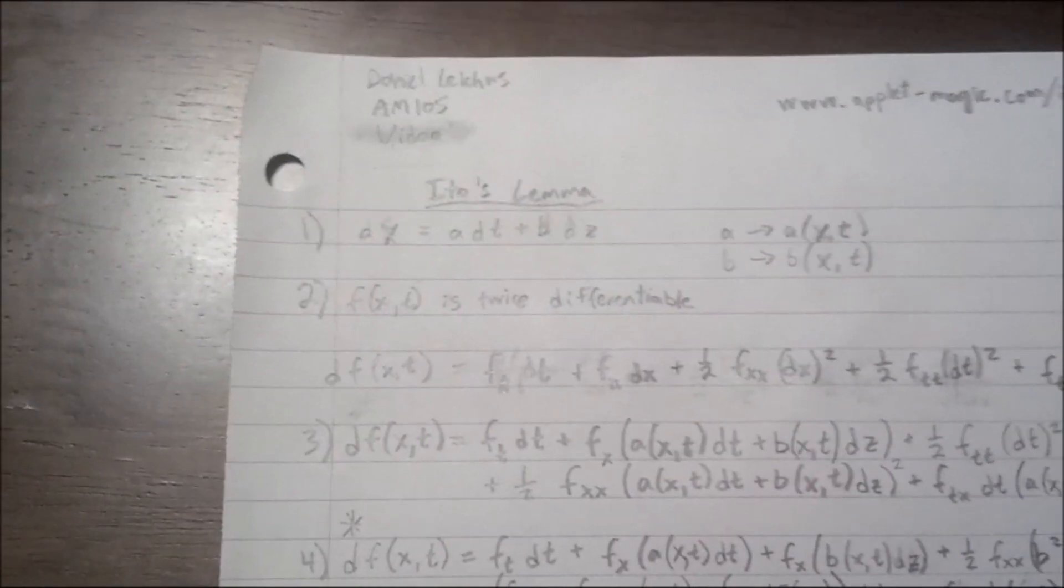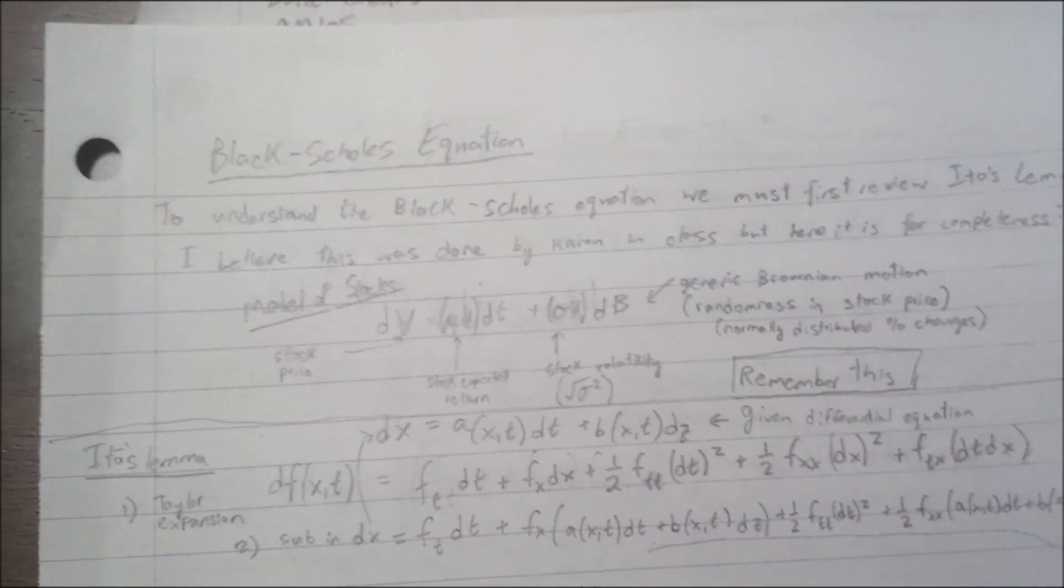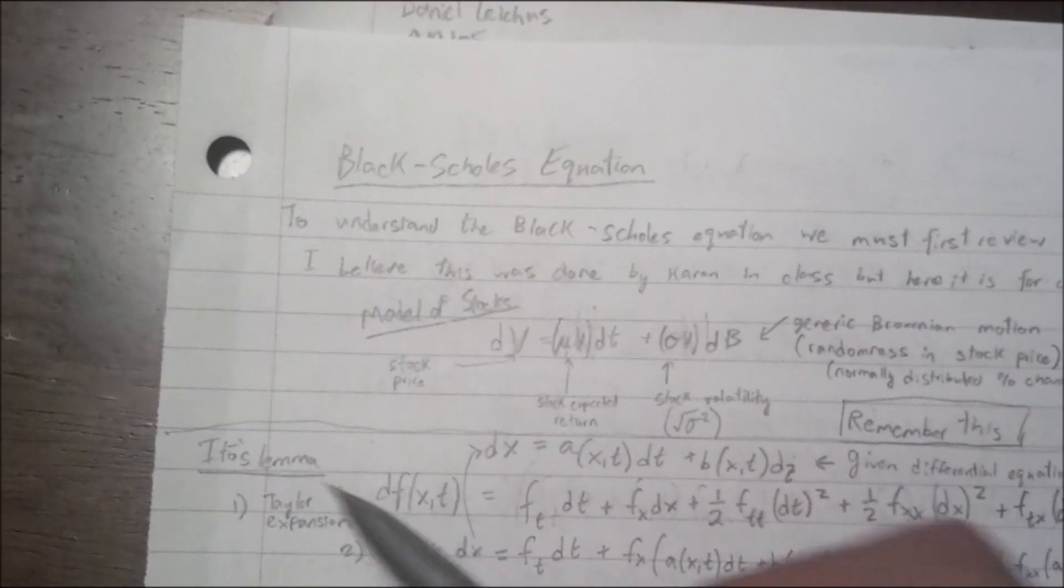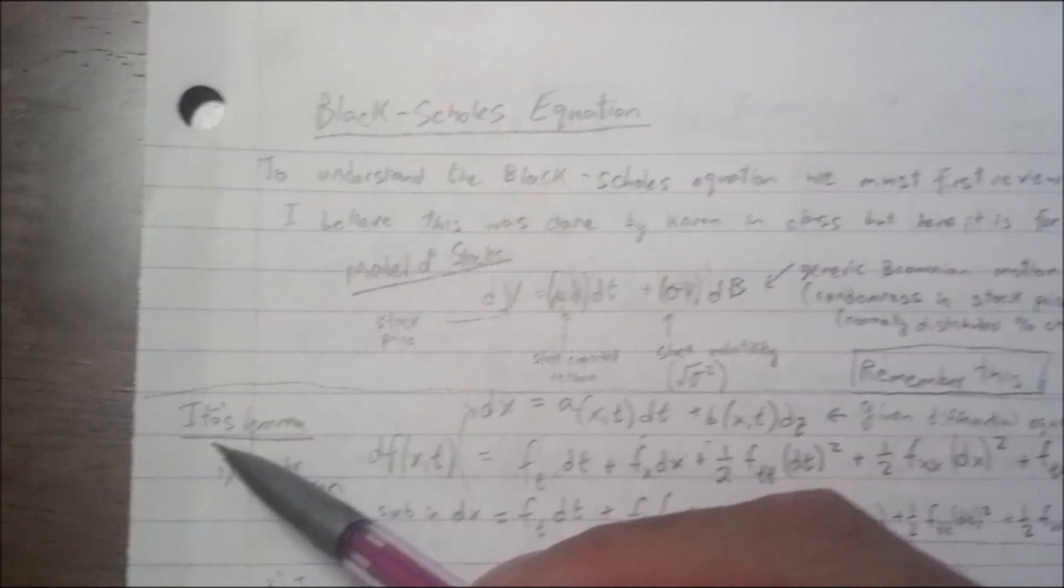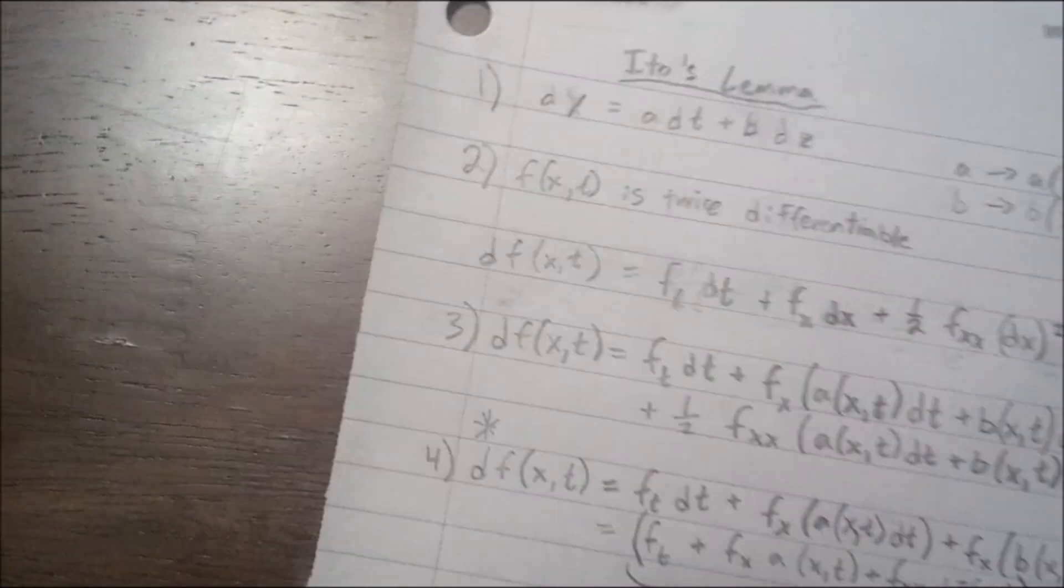And if you'll notice, that's exactly what we do in the Black-Scholes equation. There's a stochastic process, which is the randomness of distributions of stock returns, and we want to find the time differential of that, and we use Ito's Lemma. So I'm going to explain it.